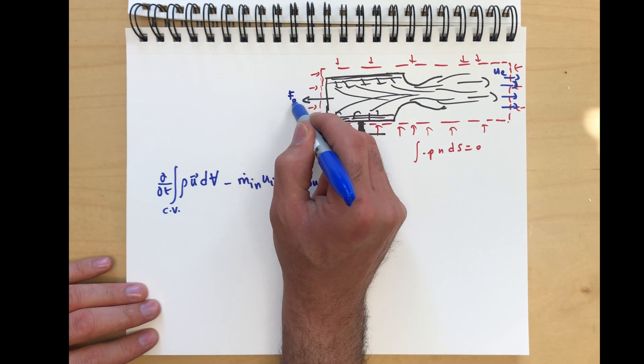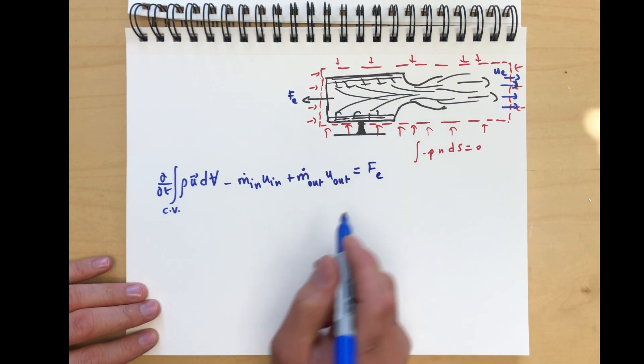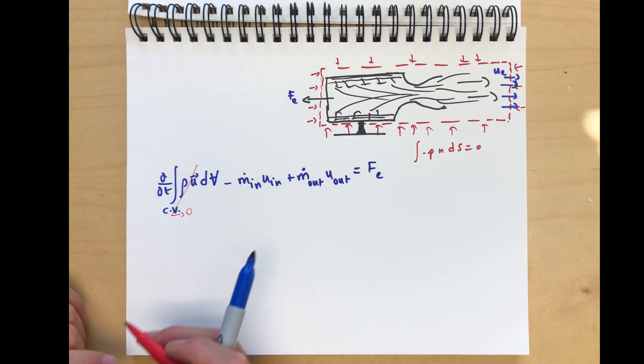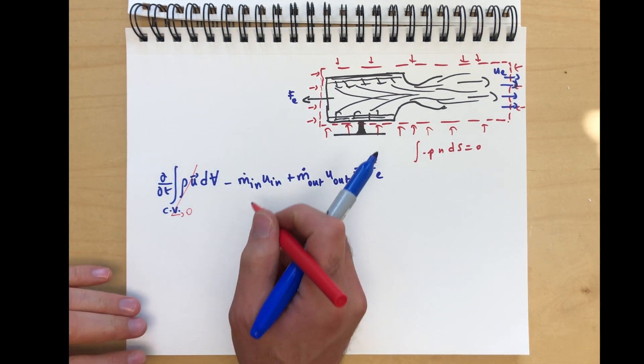Let's call this F_e. Now, this is a steady flow. So this guy is going to be zero. There's no change in time because it's a steady flow.